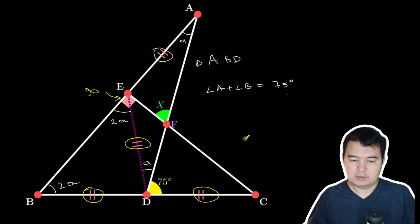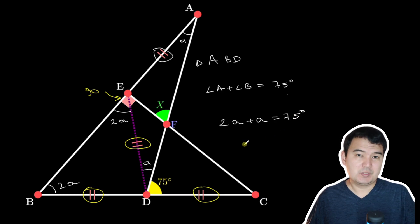So 2A plus A equals 75 degrees, which gives us A equals 25.